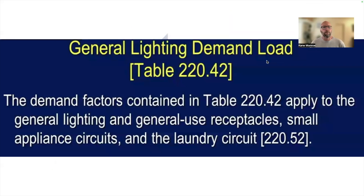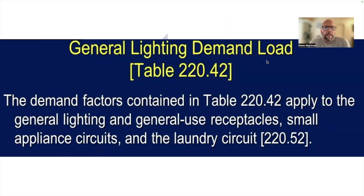When we're doing dwelling units, we have to take into consideration some demand factors based on different items. In NEC 2017, we look at Table 220.42 and apply general lighting and general use receptacles, and in Table 220.52 we add our small appliance circuits and our laundry circuit.